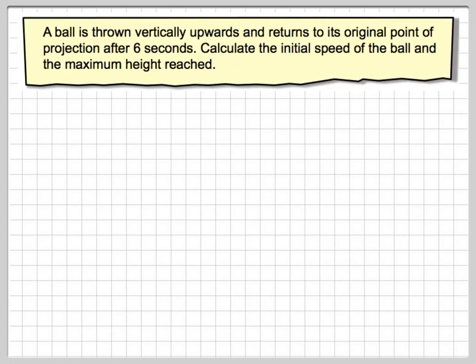A ball is thrown vertically upwards and returns to the original point of projection after 6 seconds. Calculate the initial speed of the ball and the maximum height reached.